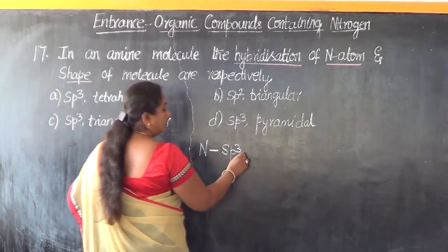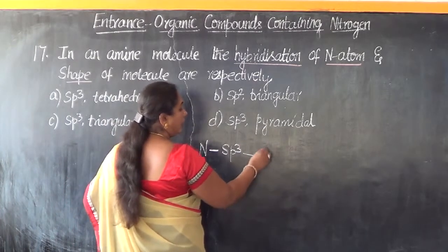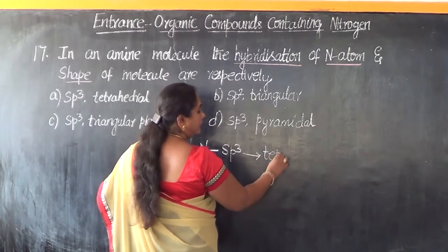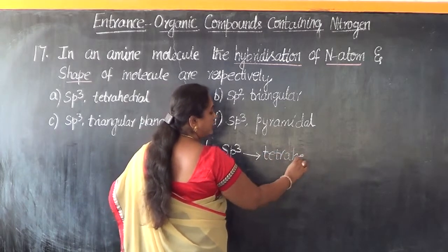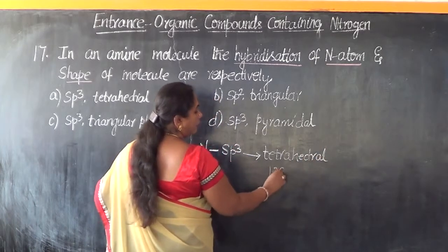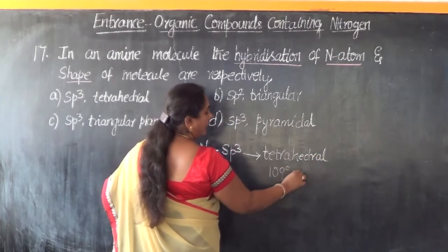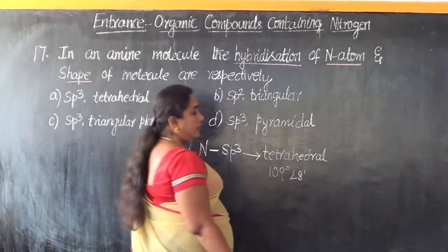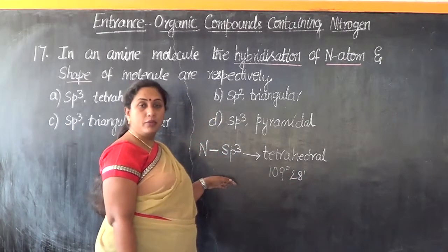The fact is that the moment they are all SP3 hybridized, they will maintain a tetrahedral shape and have a bond angle of 109 degree 28 minutes. This is of common observation.